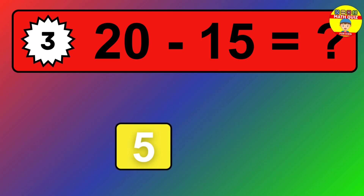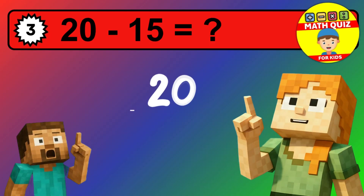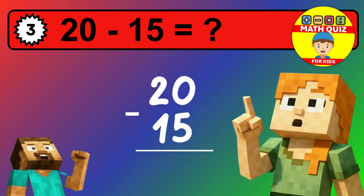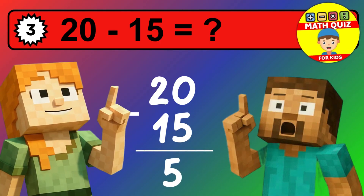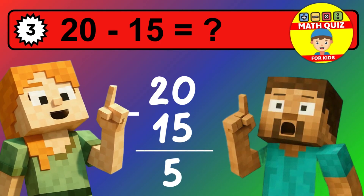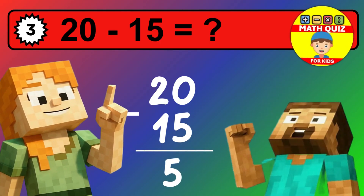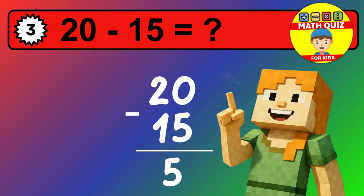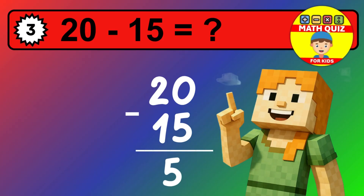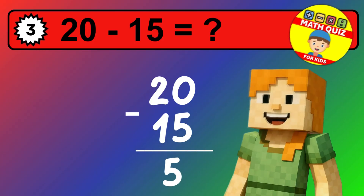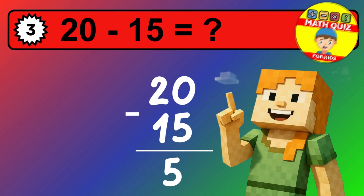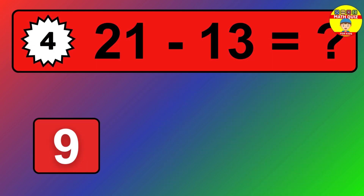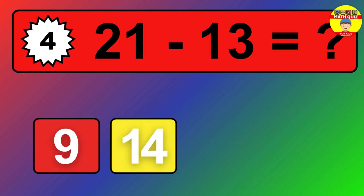We start with the units. 0 minus 3 is not possible, so we need to regroup. We take one 10 from the tens column. Now we have two tens, and the units become 10. Now we subtract. 10 minus 3 is 7. Then we go to the tens. 2 minus 1 is 1. The final answer is 17.